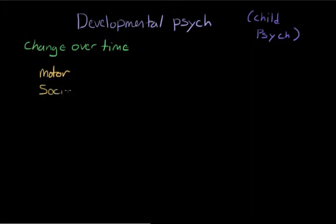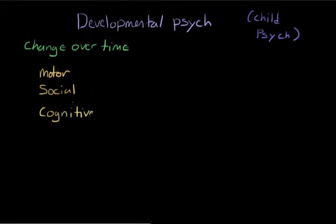Developmental psychology also looks at social changes over time — things like how we interact with our society, our peers, and our family, and how we come to understand that other people have minds and thoughts and beliefs that are different from our own. We also have cognitive development, which looks at how our thinking changes over time: how we come to understand the world around us, how we learn to interpret different cues in our visual field, and even how we come to understand addition.